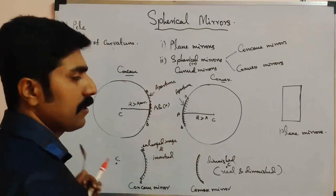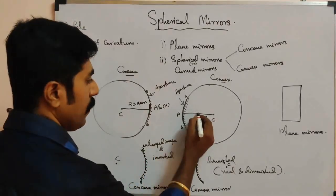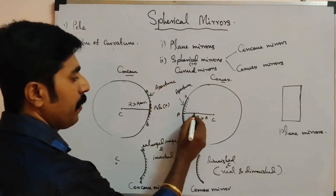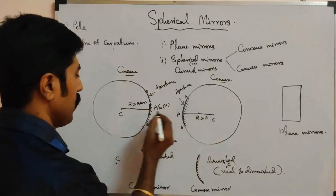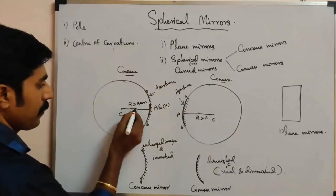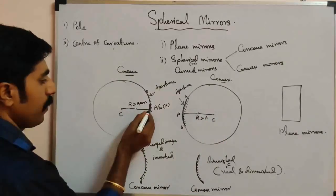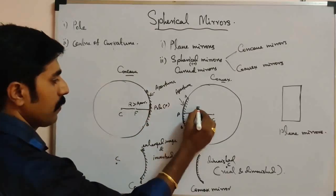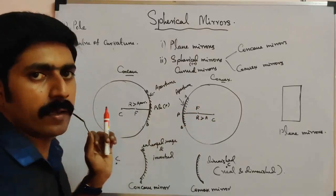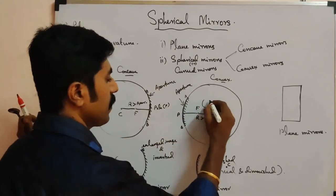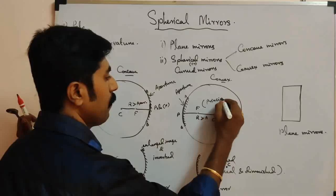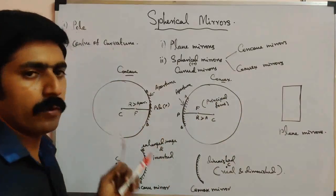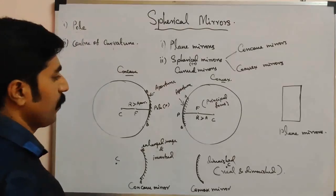There is also the focal point, otherwise called the principal focus. The focal point is the midpoint between the pole and the center of curvature. It is denoted by the letter F. Focal point and principal focus are the same thing.